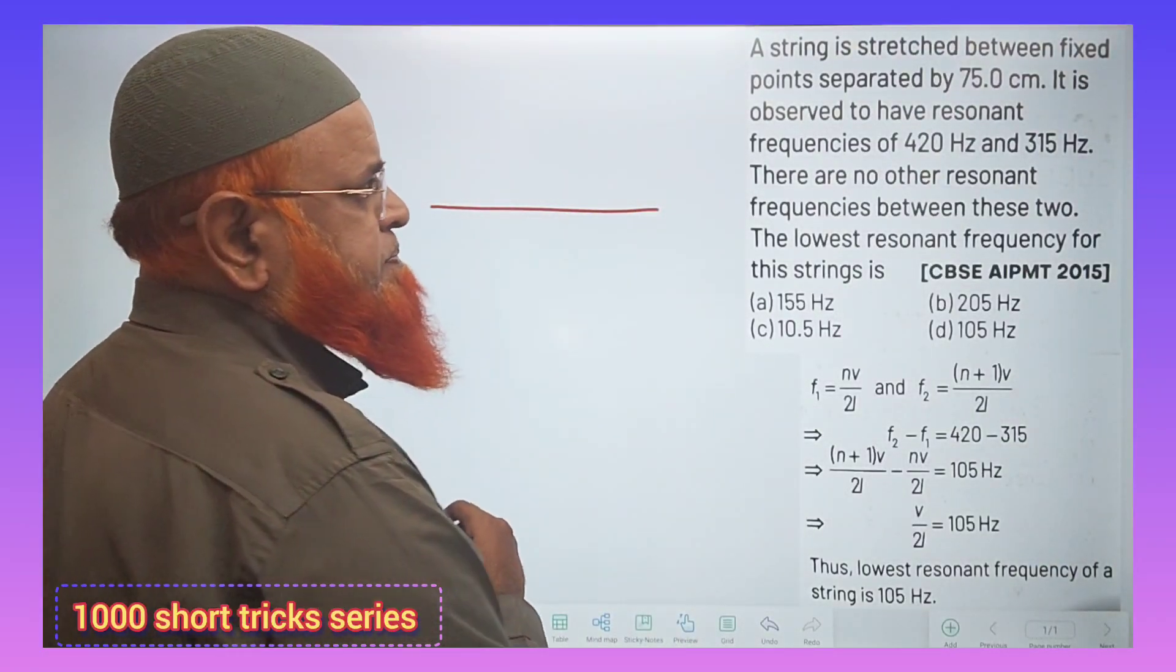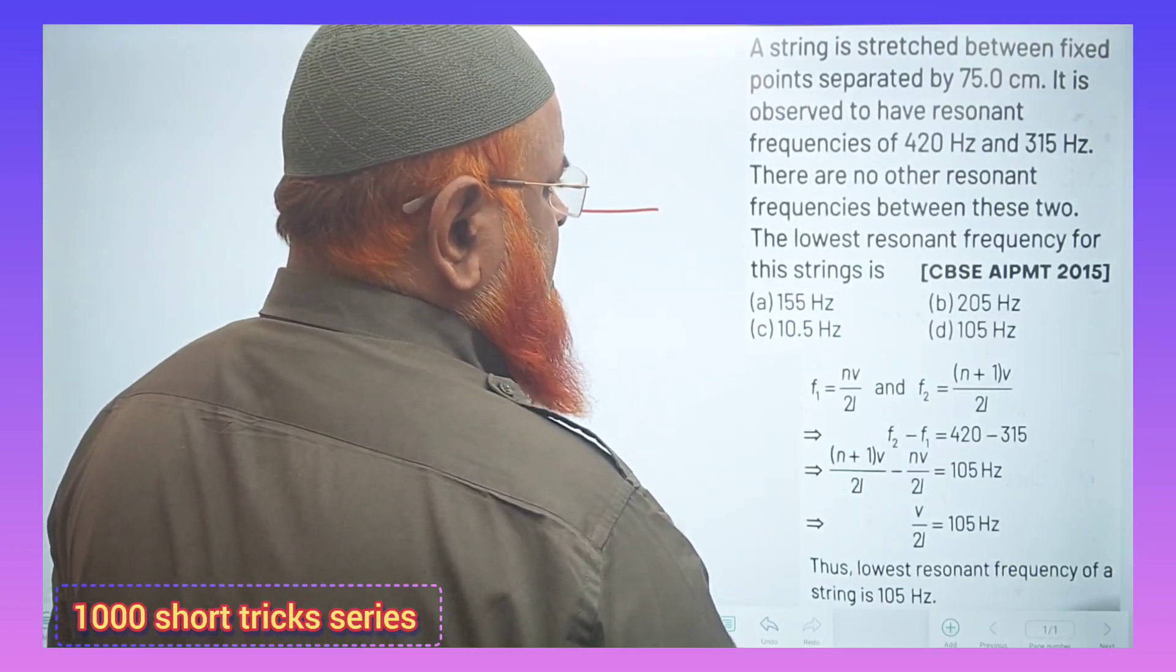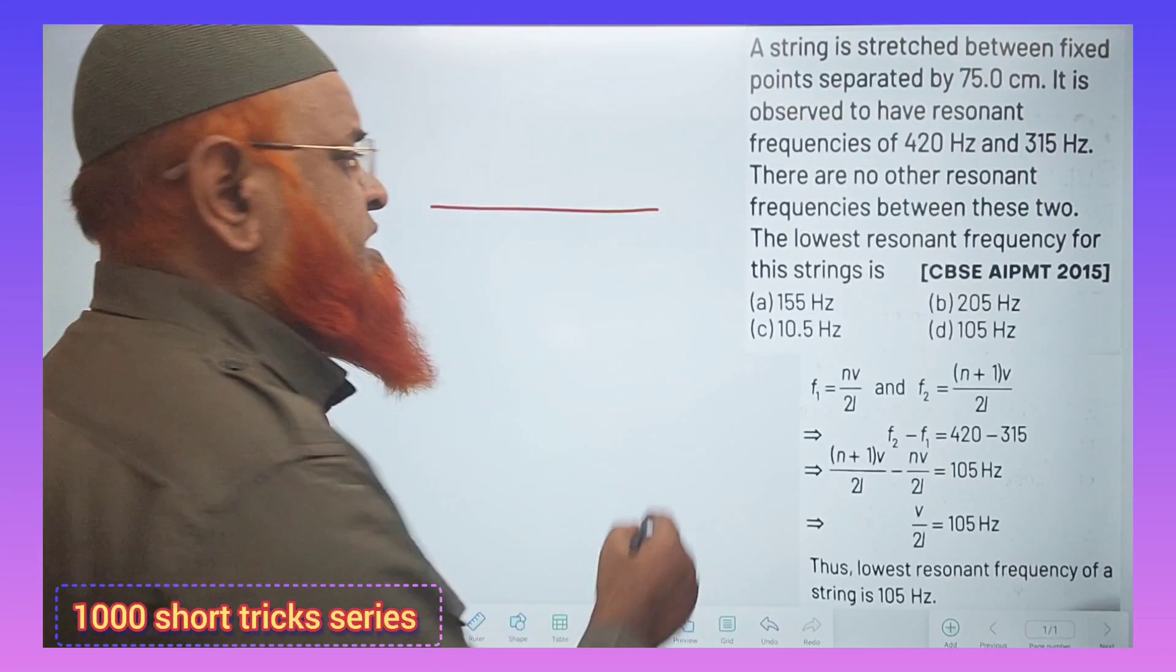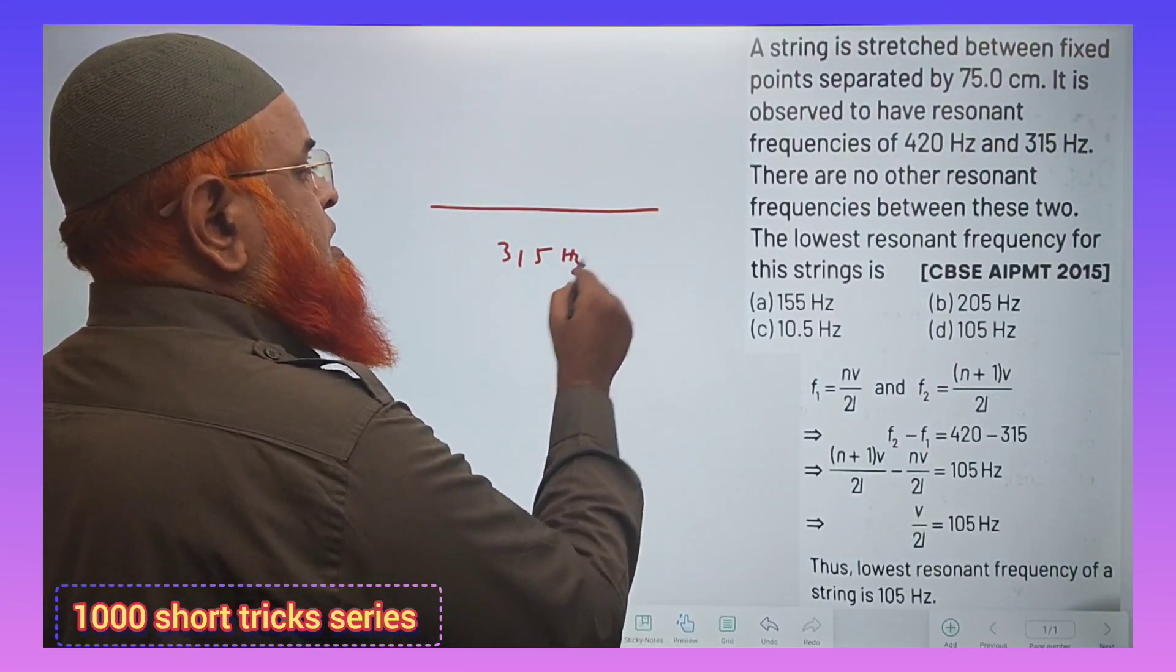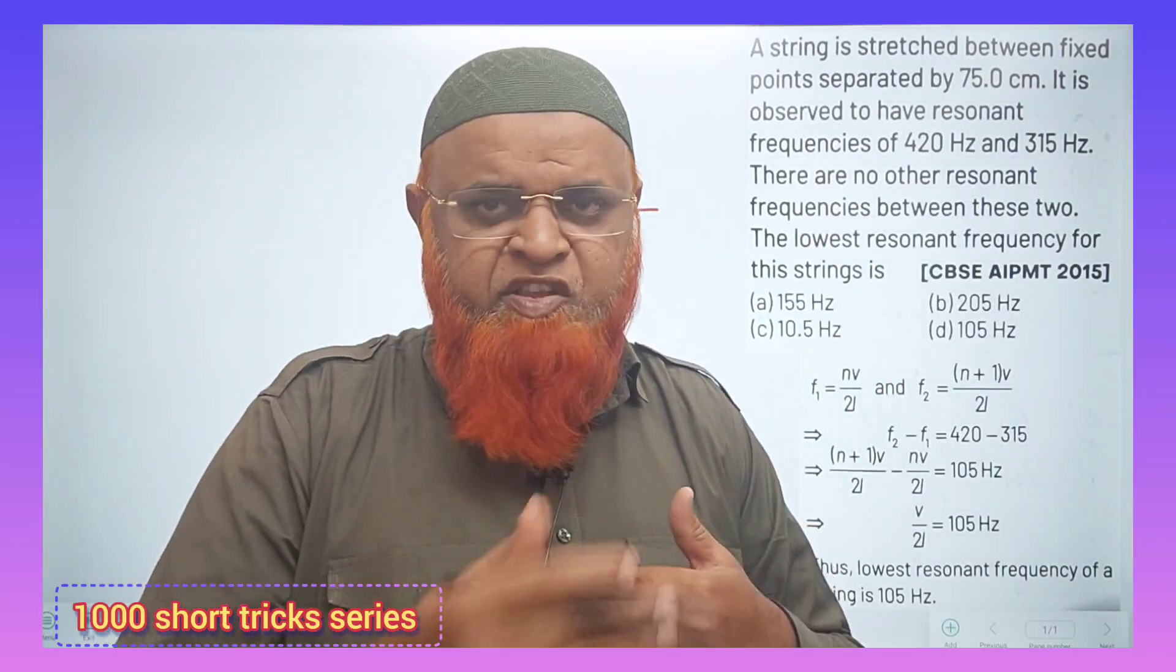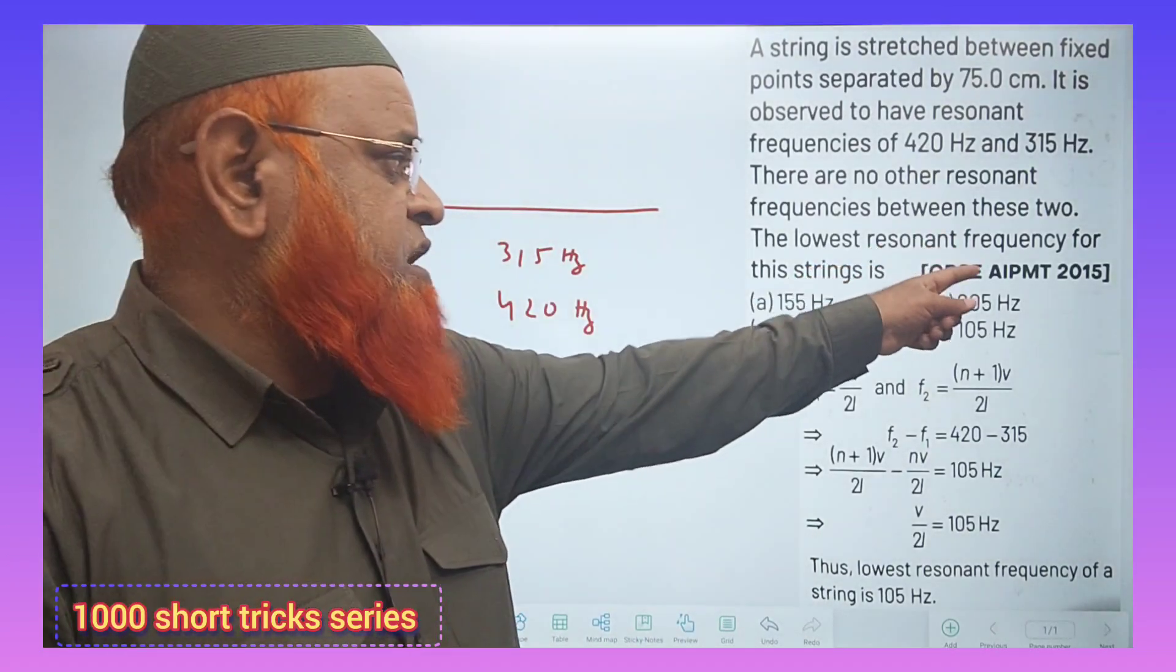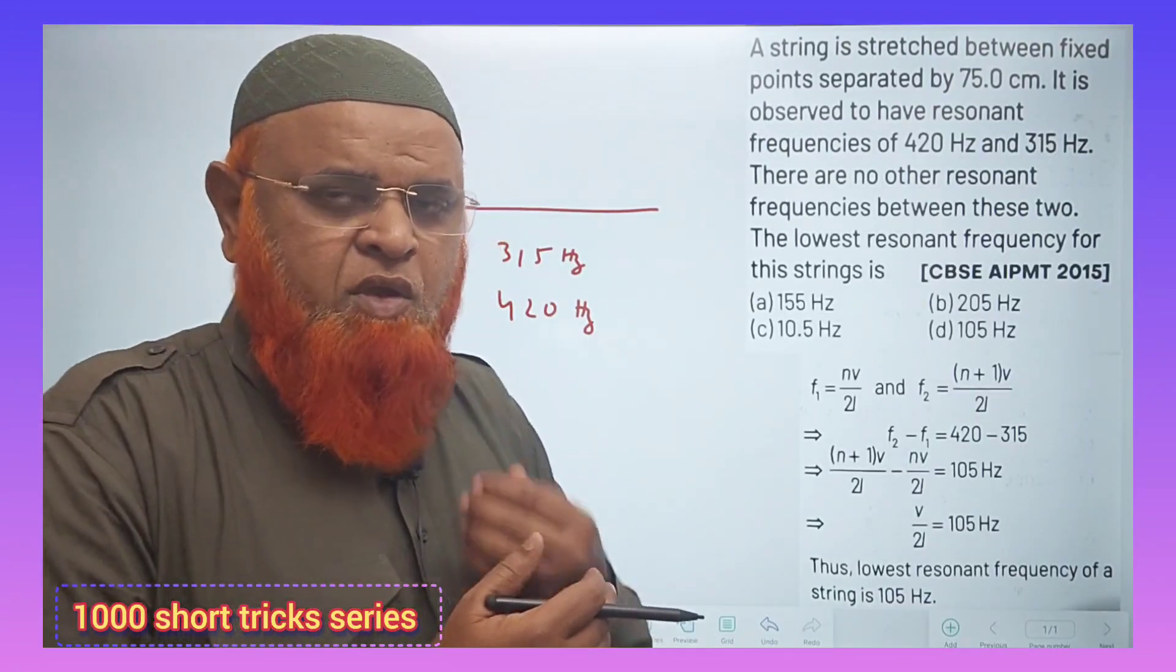There is a string, and the resonant frequencies are given. There are two frequencies given: 315 Hz and 420 Hz. There is no other frequency in between these two frequencies. The lowest frequency of the string is how much? That means the fundamental frequency you have to find out.